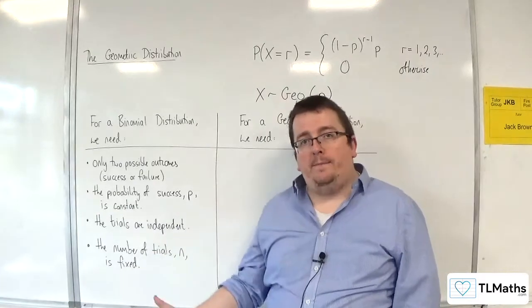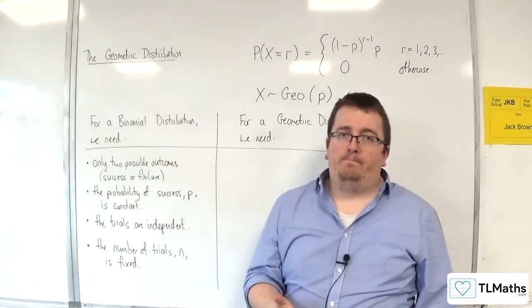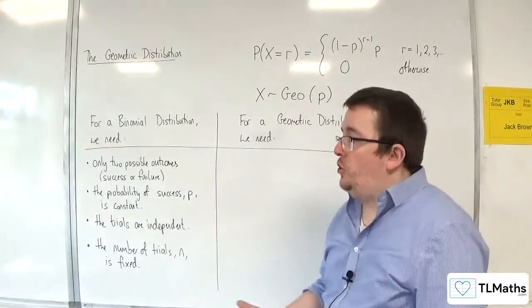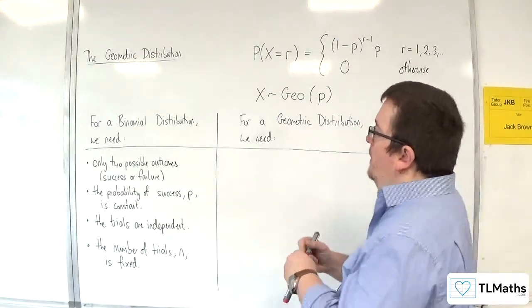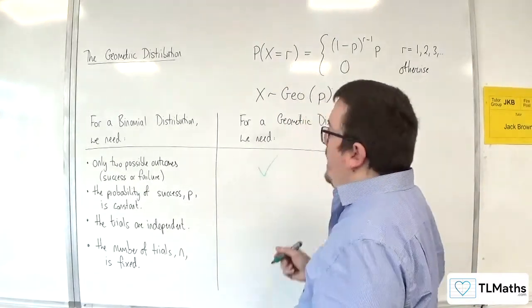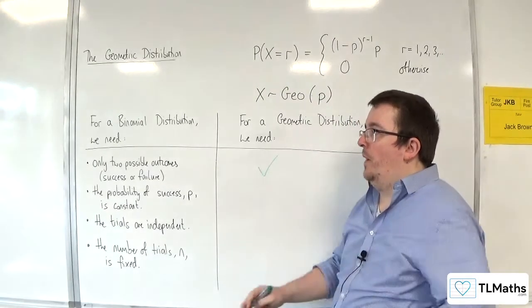You've got P, you've got 1 minus P. For the geometric distribution, that is exactly the same. Yes, we need only two possible outcomes.